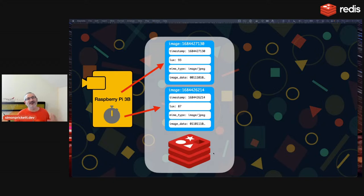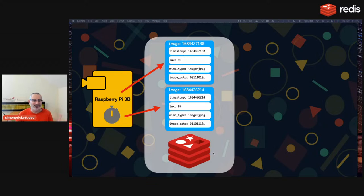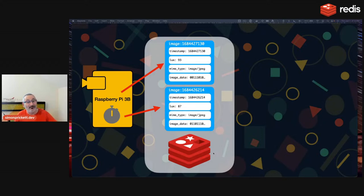We're not building a data warehouse for images here — we're building something that looks at a snapshot in time over a period of images. There are multiple industrial or data-gathering uses for this: an animal in the garden, a person crossing a threshold, a product on a conveyor belt. The images themselves aren't artifacts to keep forever; we just keep them around to do some processing, then bin them or move them to a permanent data warehouse later.